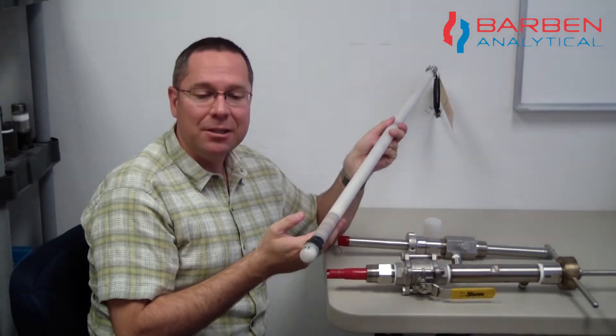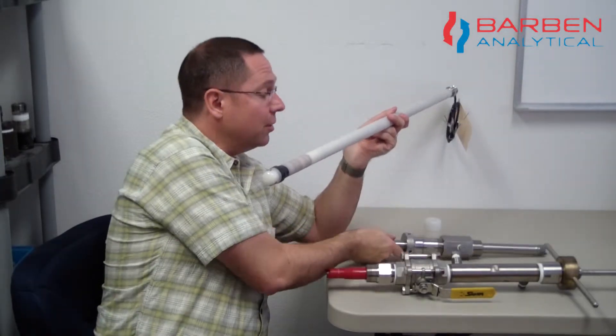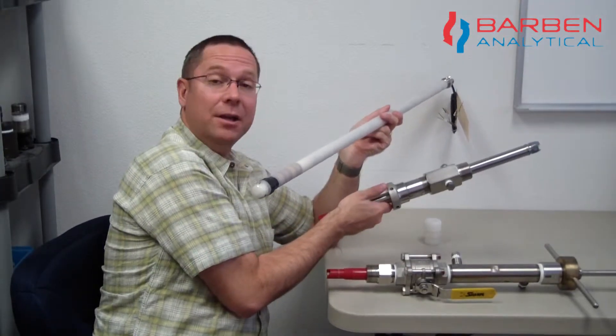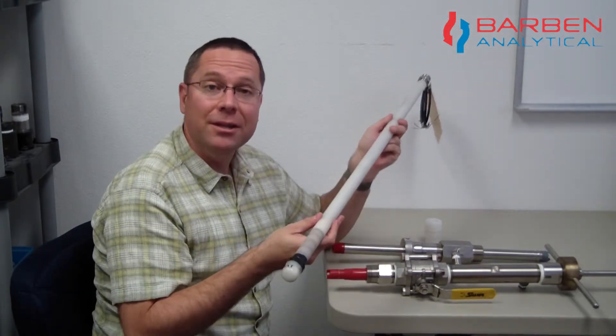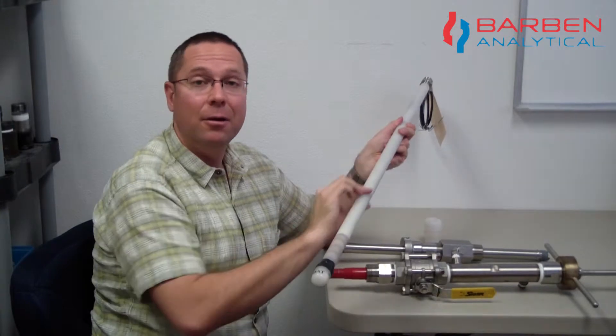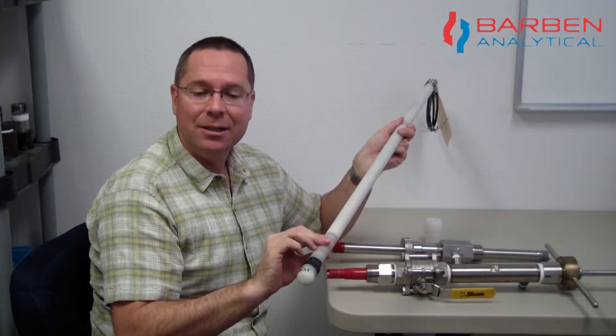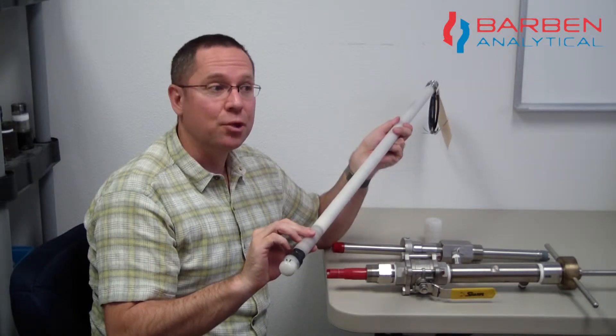Now most hot tap designs on the market use some type of metallic components such as the sheath or the compression fittings. What's unique is that the 567 provides an all Kynar plastic body that's in contact with the process. This provides you with maximum corrosion resistance.